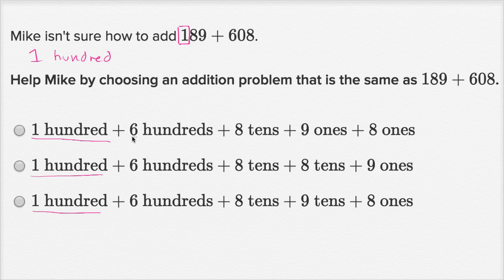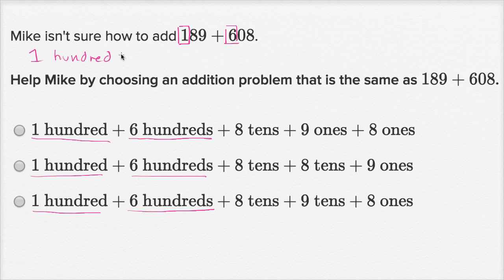And then all of the choices actually have 600s. So where are they getting that from? Well, in 608, the six is in the hundreds. So that six represents 600. So that's where they got the 100 and the 600s from.